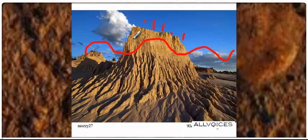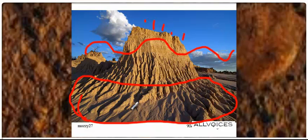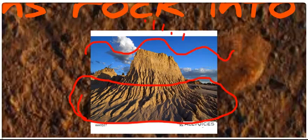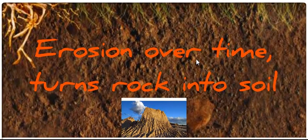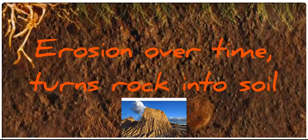All of those will separate little bits and pieces of this rock at a time. And we can see down here at the bottom of it, those little bits and pieces of rock have deposited at the bottom. This will be eventually turned into soil. Erosion over time turns rocks into soil.